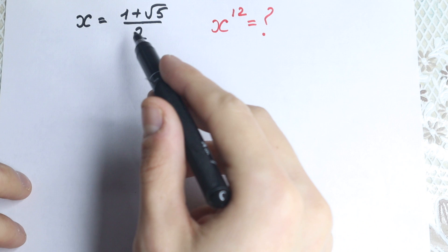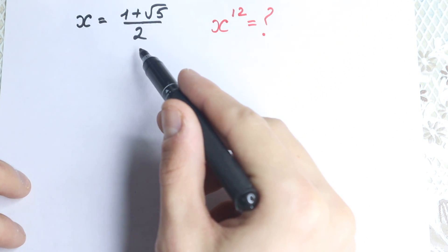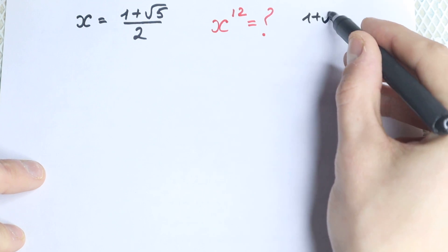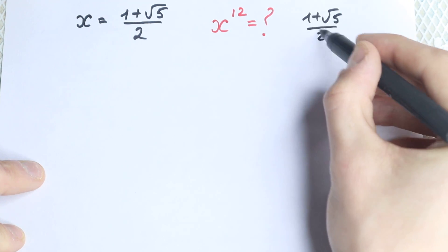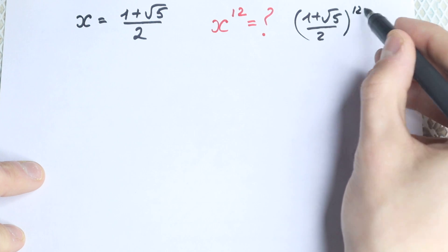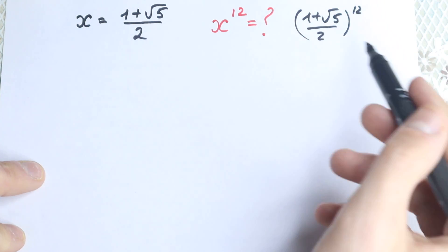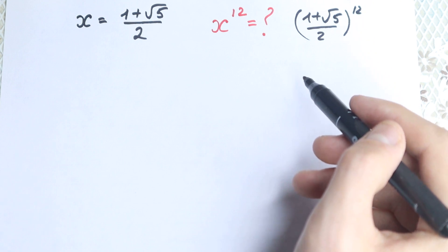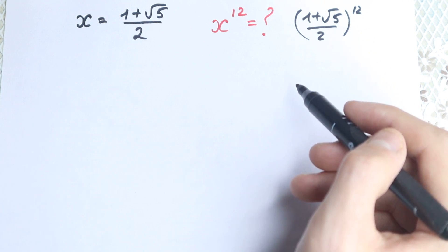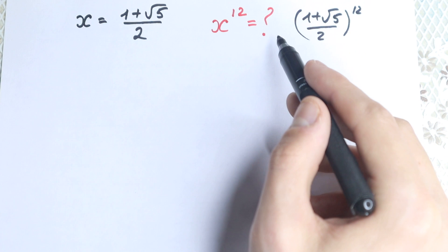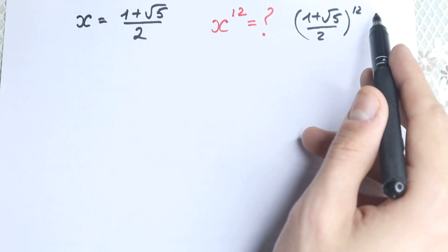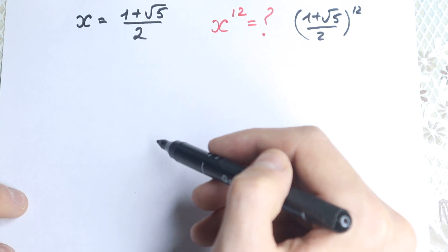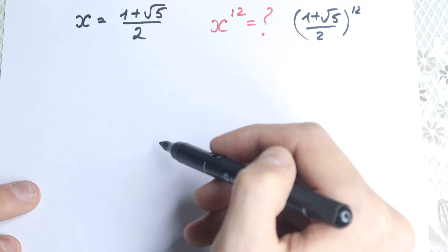We have x equal to 1 plus square root of 5 over 2, and we need to find x to the 12th power — that is, (1 + √5)/2 to the 12th power. It looks like a really hard question because we have a square root and a 12th power. How can we find x to the 12th power? In this video I'm going to show you a really interesting approach.